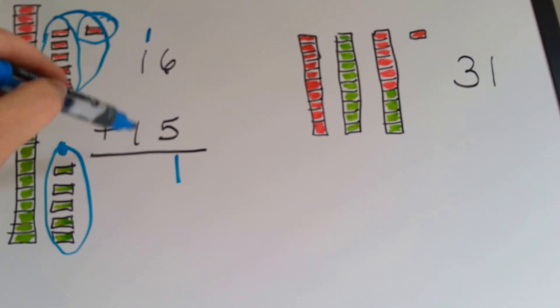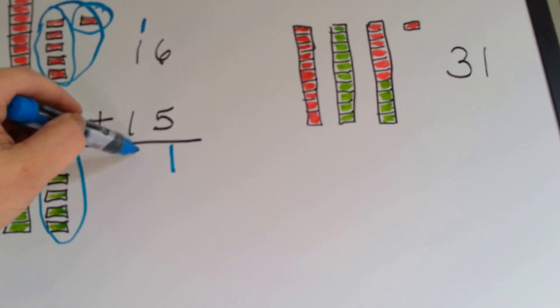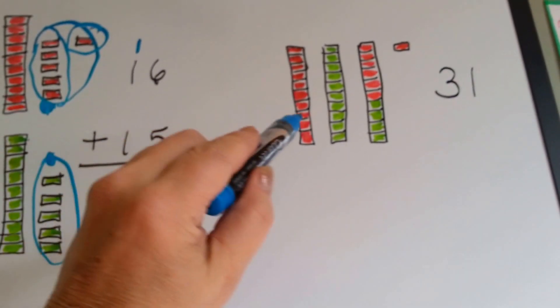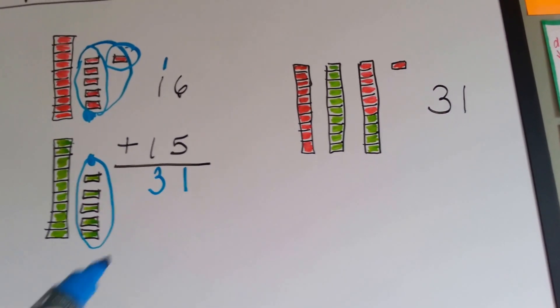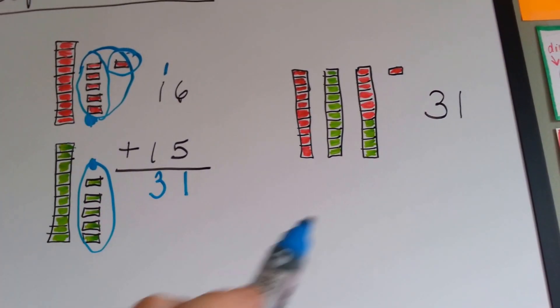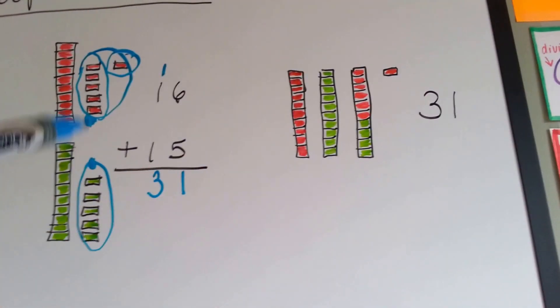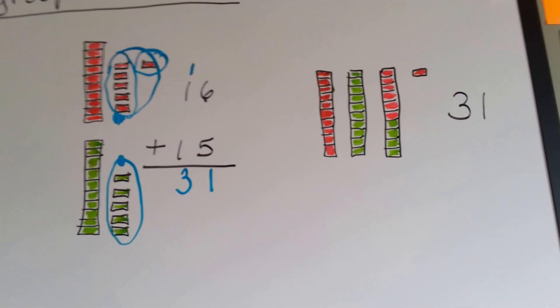Then we add the tens up, 1, 2, 3, and we get 31. 3 tens and 1, 1. See how we did that? See how we made a whole new bar of 10 by putting these single ones together?